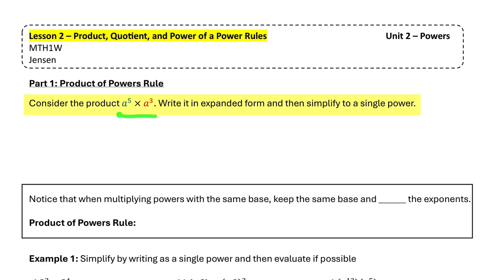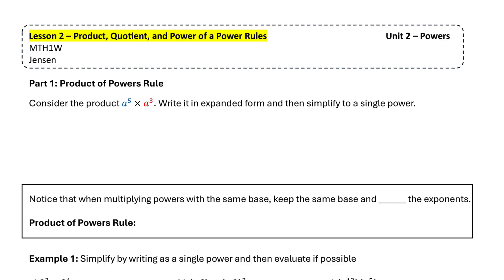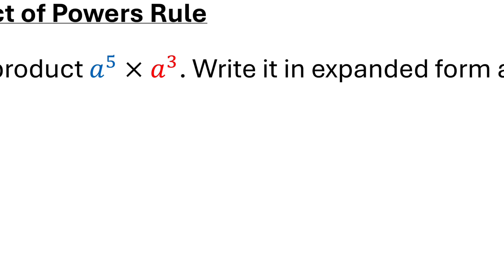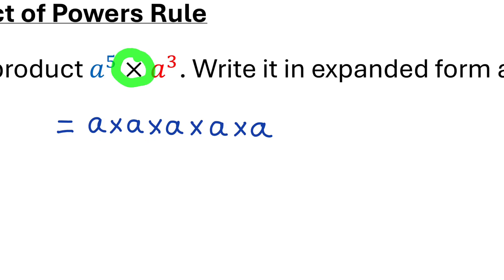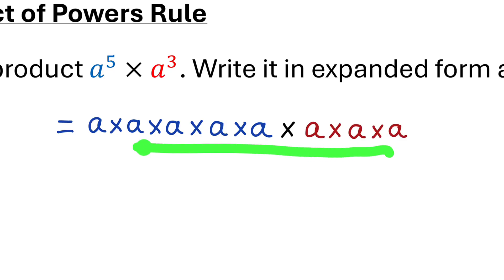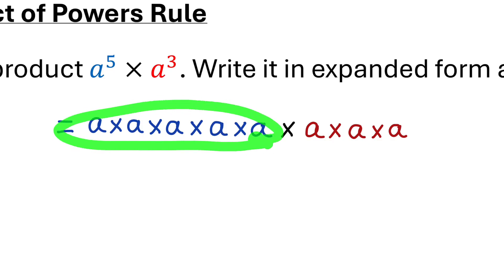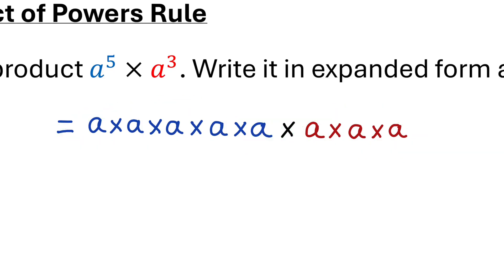We'll start by considering this product of two powers: a to the power of five times a to the power of three. We'll write it in expanded form and then simplify to a single power, and that's going to allow us to come up with the product of powers rule. I have a to the power of five, which means five factors of a being multiplied together, and those five factors of a are going to be multiplied by a to the power of three, which means three more factors of a.